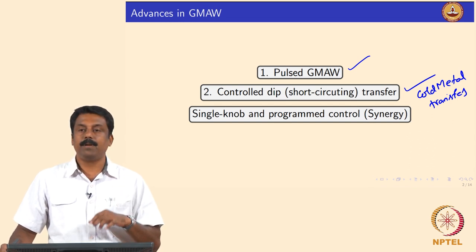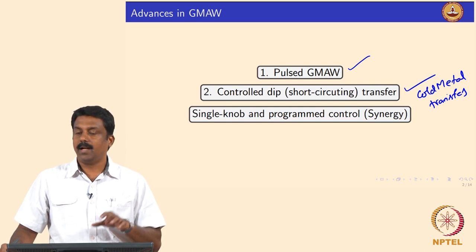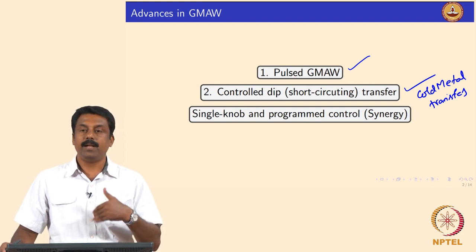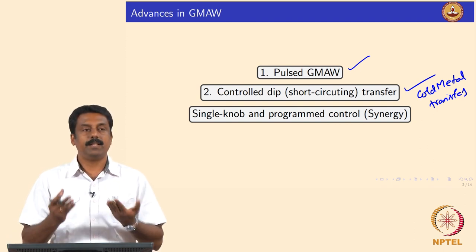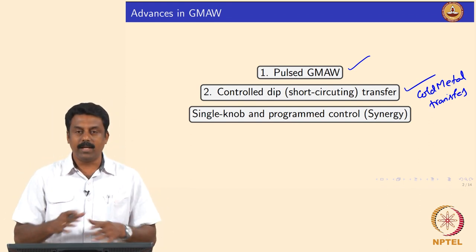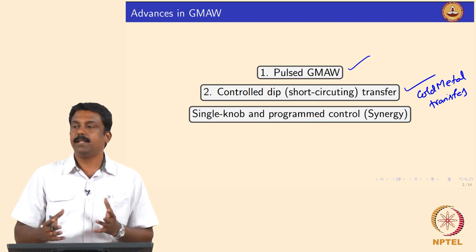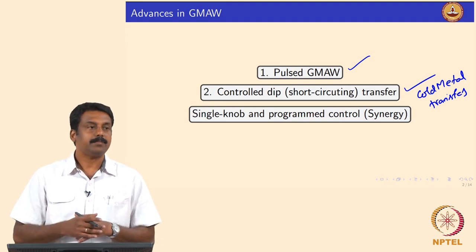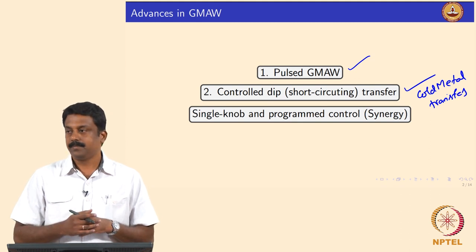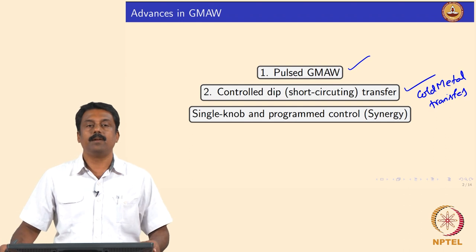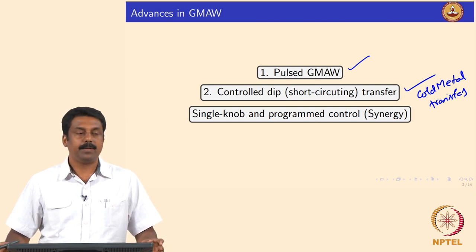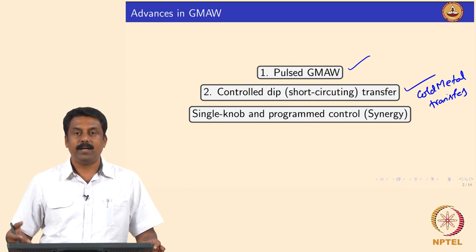To achieve stable transfer during the short-circuiting event, people modified the waveforms so that when short-circuiting happens, we can minimize the current by detecting voltage, and manipulate the wire movement back and forth to achieve drop transfer at extremely low heat input. In fact, we can transfer a droplet at the melting temperature of the droplet by controlling the dip transfer. These two processes — pulse GMAW and controlled dip transfer, known by various brand names with one being cold metal transfer — are widely used in GMAW.